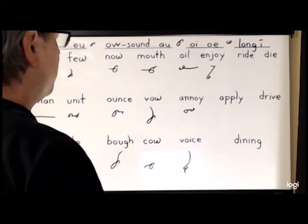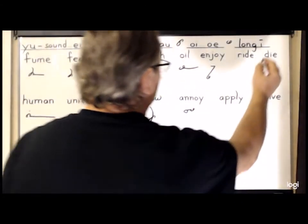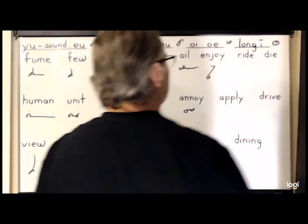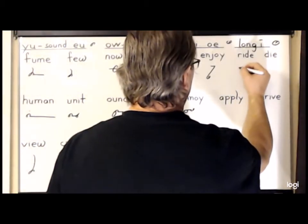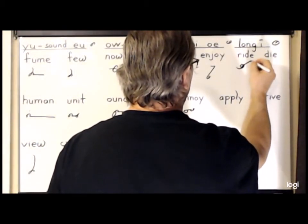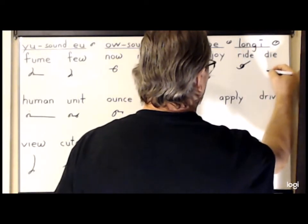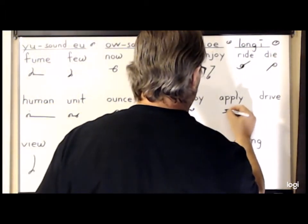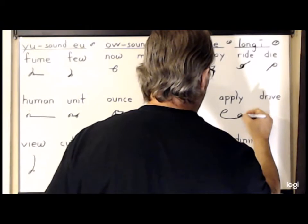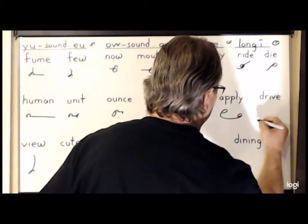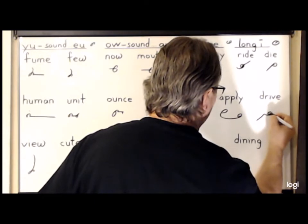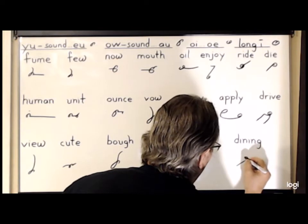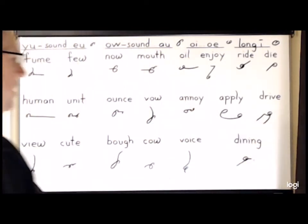And for the diphthong long I, it looks like a large circle with an indentation in it. For the word 'ride', we'll write R-I-D. For 'die', D and long I. 'Apply' is A-P-L and long I. For 'drive', D-R-I-V. And lastly, 'dining' is D-I-N and a dot for the I-N-G at the end.